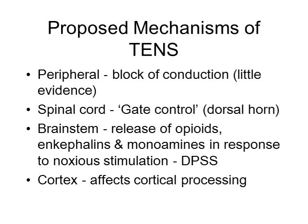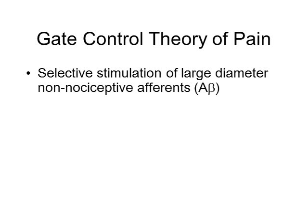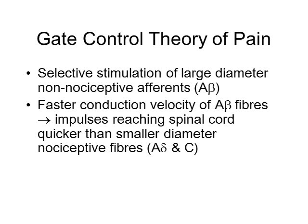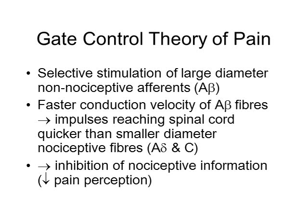The gate control theory is central to understanding how TENS may work. Conventional TENS will stimulate A-beta fibres. These fibres are normally involved with the sensations of light touch, vibration, and pressure, and stimulation of these nerves by TENS is where the sensation of pins and needles comes from. Activity in these fibres reaches the spinal cord before activity in pain fibres, i.e. before activity in A-delta fibres and C fibres. This activity in A-beta fibres then inhibits the passage of nociceptive impulses to higher centres, and thus reduces the perception of pain.